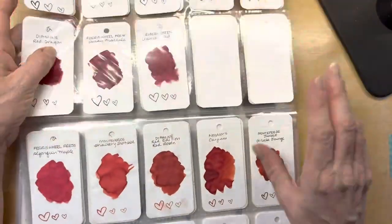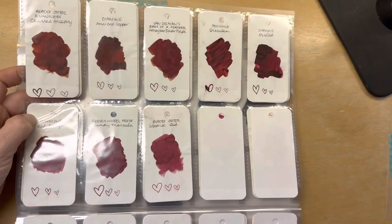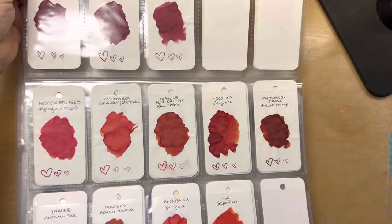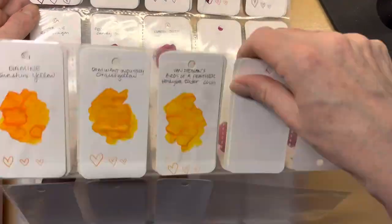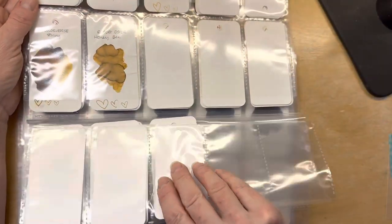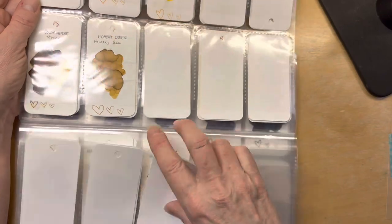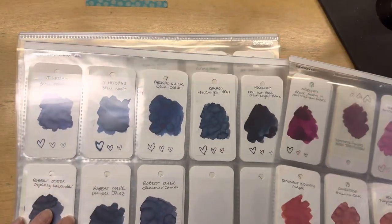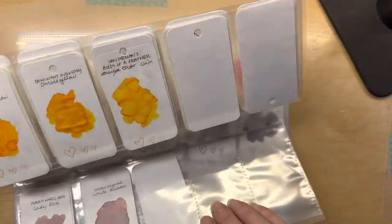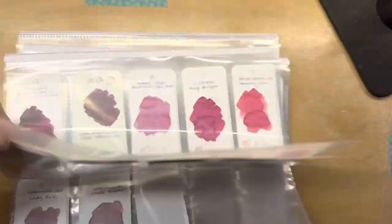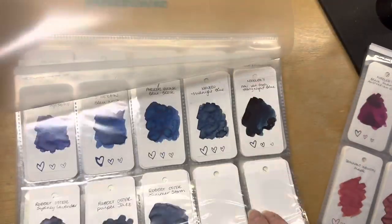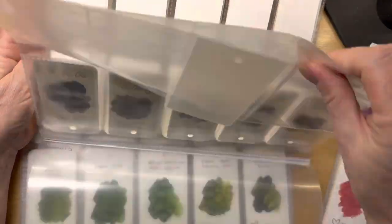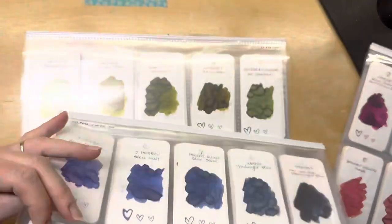And bonus, right? I can see 20 inks all at a glance and do some comparisons. I don't think other than greens I have 20 in similar color families to compare at a glance, but you kind of get the idea. So I've got one for my pinks, reds, oranges and into browns. I have one for blues and purples and grays. And then I have another one for just greens because I need to find my favorite green fountain pen ink.